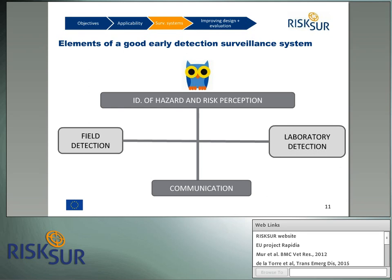The basic elements of a good early detection surveillance system include, first, an identification of the hazard — that is, a knowledge of the epidemiology, diagnosis, prevention and control of the infection of concern, and of the different pathways and scenarios that would make occurrence of the hazard possible. This is only applicable for known diseases. Risk perception is very important, particularly if a risk assessment has not been previously performed. From RISC-SER, we strongly encourage that risk assessments are carried out to identify populations, times and places at higher risk of infection occurrence.